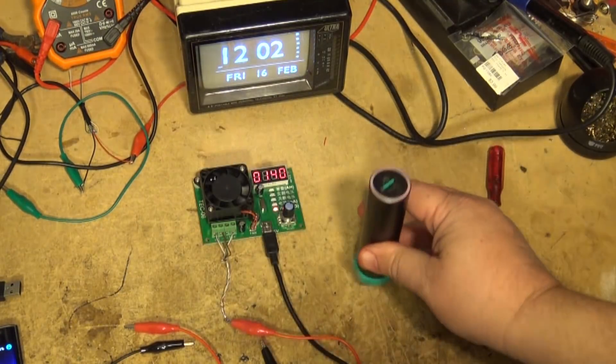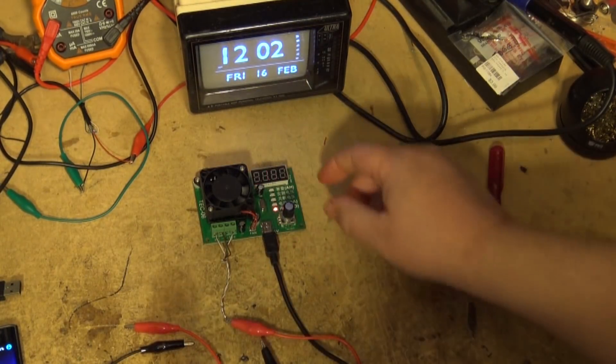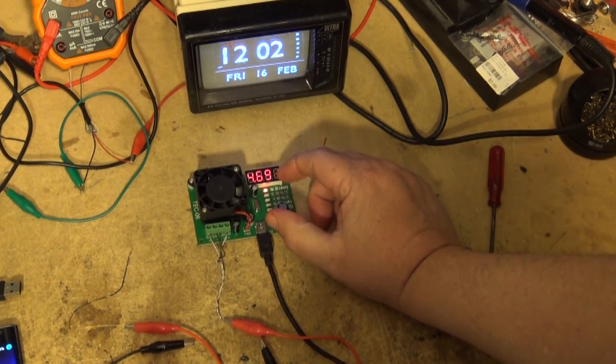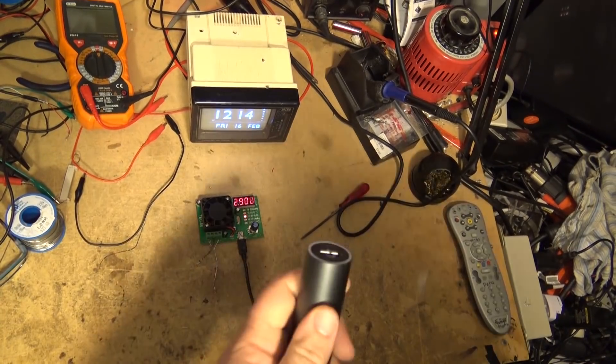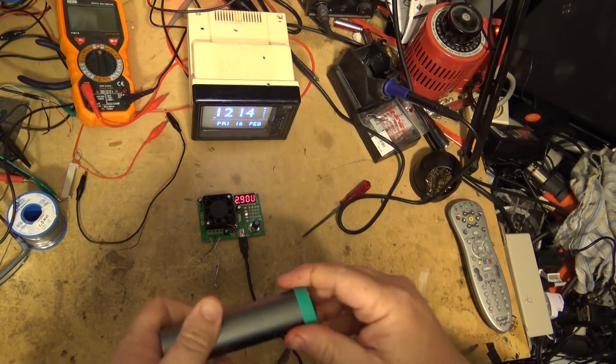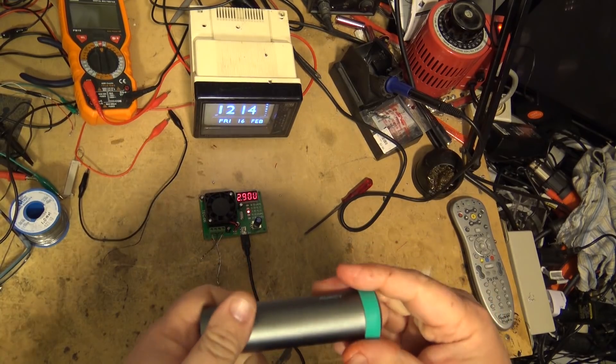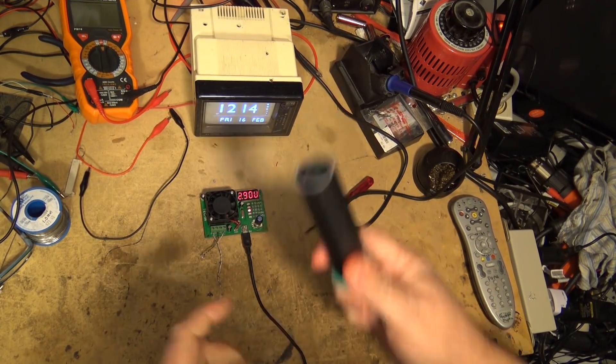So we are not fully discharged, but we are discharged enough to give us a good idea that it is going to approach 5000 milliamp hours. So that's it for the teardown of the Aukey 5000 milliamp hour power bank.